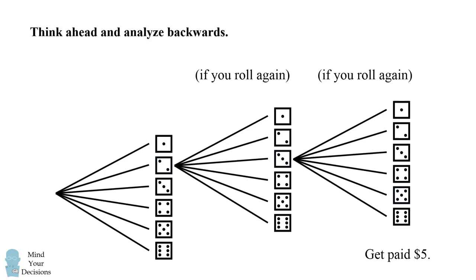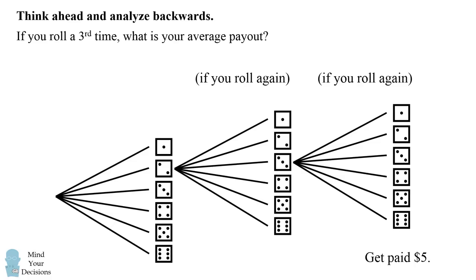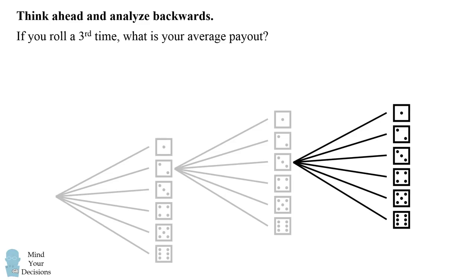So if you roll for the third time, what is your average payout? In other words, let's not consider the first two rolls of the game. Let's just focus on the third roll and ask, if we got to the third roll, what would our average payout be?